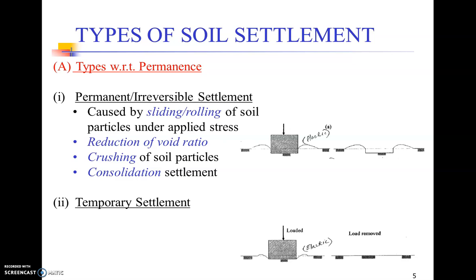Permanent failures are caused by the sliding and rolling of soil particles, which are displaced to new positions. Similarly, reduction of void ratio and crushing of soil particles are causes, and this may bring a subtle change in the soil's gradation itself.